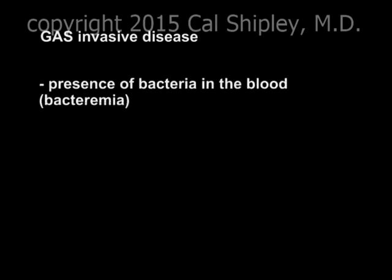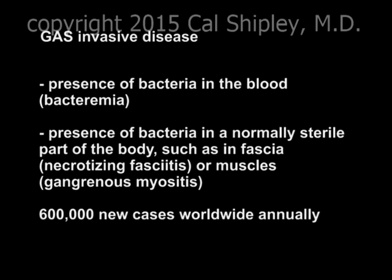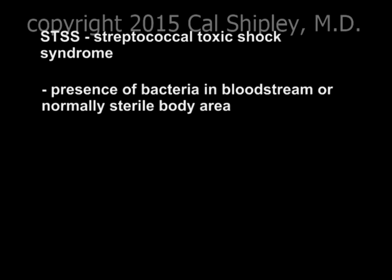Invasive GAS disease occurs when the bacterium enters the bloodstream or otherwise sterile parts of the body, such as muscles or fascia. It is estimated that there are about 600,000 new cases of invasive GAS disease annually worldwide. While this is a significant number, it pales in comparison to the 700 million estimated cases of localized GAS infection yearly. One form of invasive GAS disease is Streptococcal Toxic Shock Syndrome, also known as Streptococcal Septic Shock. Streptococcal Toxic Shock Syndrome, also known by the acronym STSS, is characterized by the presence of the bacteria in the bloodstream or a normally sterile body area.